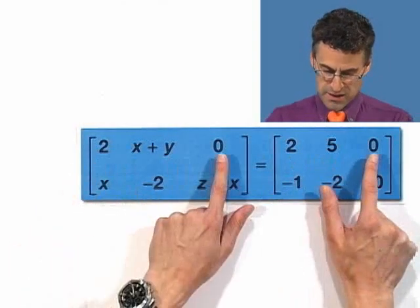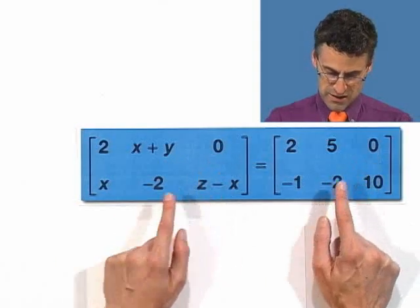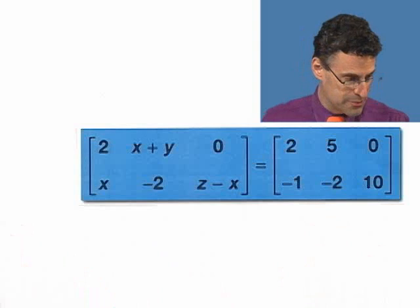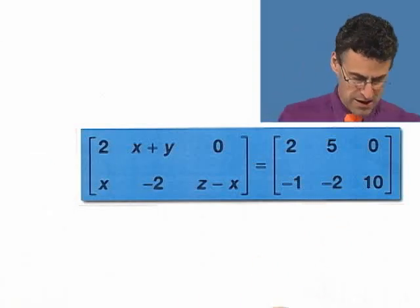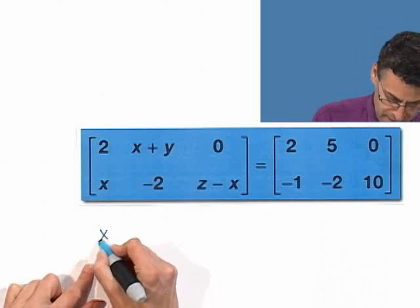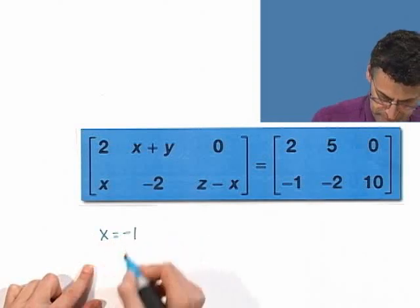So the 2 has to equal 2. That's great. The 0 has to equal 0. That's great. The negative 2 has to equal negative 2. That's great. But what about the other stuff? Well, they just have to be equal. There's no ifs, ands, or buts. Well, that means that X must be negative 1. I can just read that right off here. X equals negative 1.